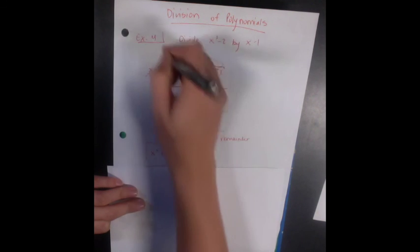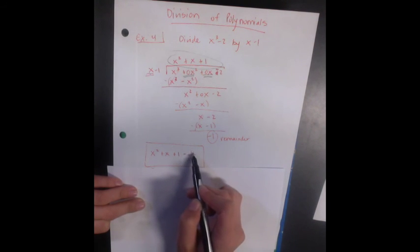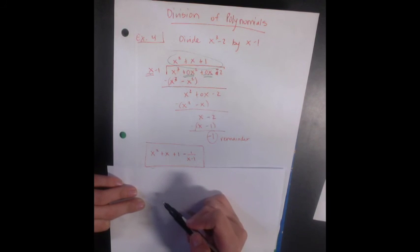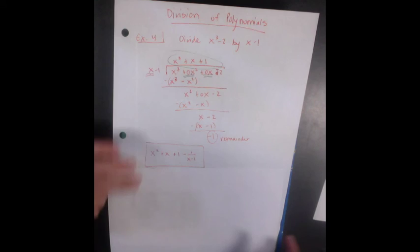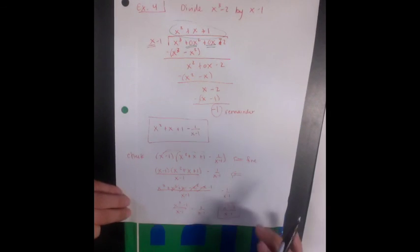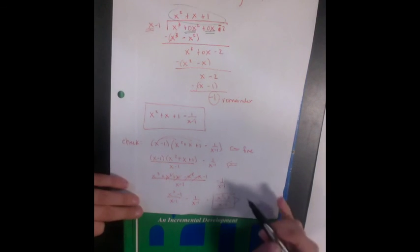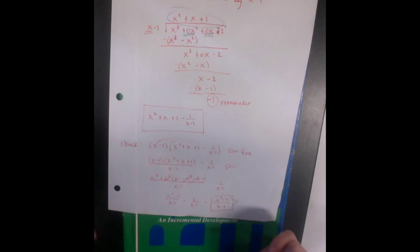So I write my x squared plus x plus 1 minus my remainder. It's 1, so minus 1 over x minus 1. And we can always check our solution by multiplying x minus 1 back in, and it gives us our equation, our problem, x cubed minus 2 over x minus 1.